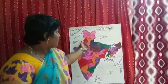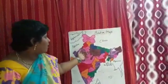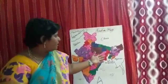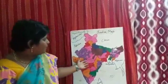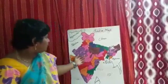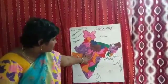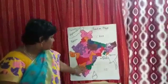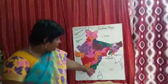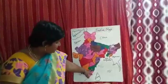The states include: Himachal Pradesh, Punjab, Uttarakhand, Haryana, Uttar Pradesh, Bihar, Assam, Meghalaya, Tripura, Jharkhand, Rajasthan, Gujarat, Madhya Pradesh, Chhattisgarh, Odisha, Maharashtra, Karnataka, Telangana, Andhra Pradesh, Tamil Nadu, Kerala. What is our state? Andhra Pradesh — it is here.